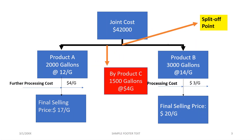Taking the same scenario from our previous video, here we have a joint cost of 42,000. Two products have been produced: product A and product B.